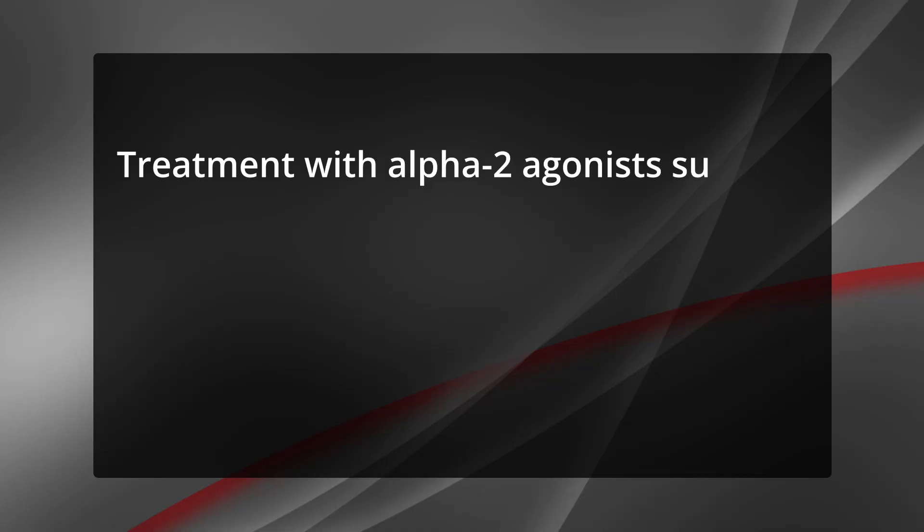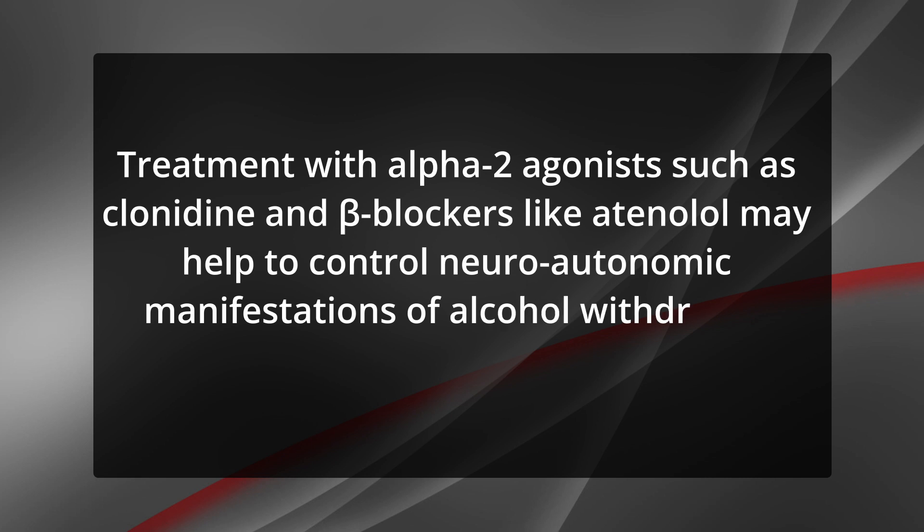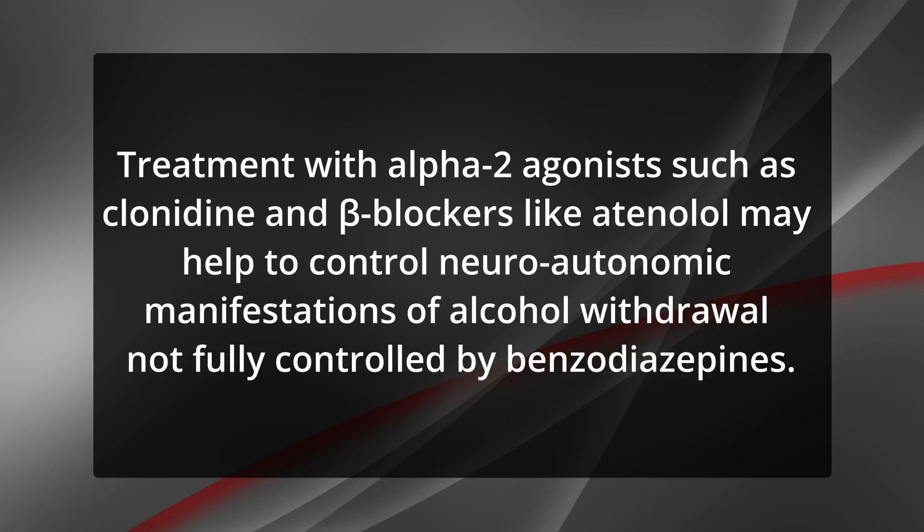Benzodiazepines act by enhancing the effect of the neurotransmitter GABA at the GABA receptor, and should be used with caution and close monitoring, especially when combined with alcohol or opioid medications. Adjunct treatment with alpha-2 agonists such as clonidine and beta blockers like atenolol may help to control neuroautonomic manifestations of alcohol withdrawal not fully controlled by benzodiazepines. However, these drugs should only be used as adjunct treatment, not as monotherapy. An important part of successful alcohol withdrawal treatment is engaging the patient in a program aimed at achieving and maintaining long-term abstinence from alcohol or reductions in drinking, using pharmacological or psychosocial tools.